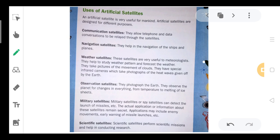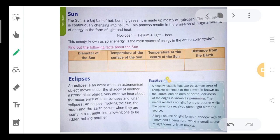The sun is a big ball of hot burning gas. It is made up mostly of hydrogen, which is continuously changing into helium. We will discuss all these details in the next video. Until then, stay home, stay safe. Thank you very much.